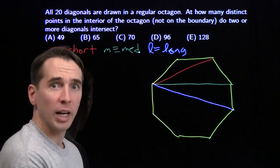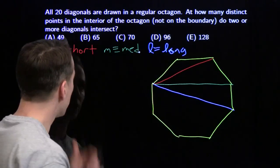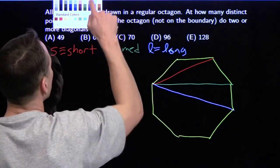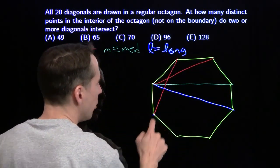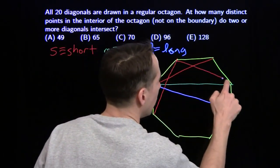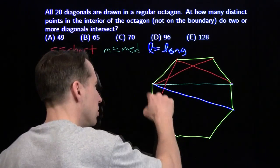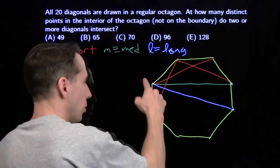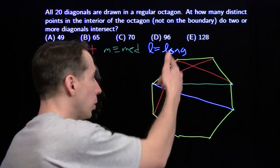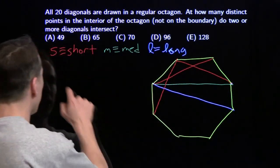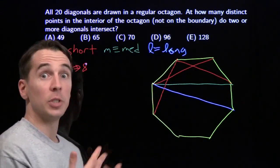We're going to organize our counting by thinking about each type of diagonal and what sort of intersections they generate. Starting with the short ones: for each side of the octagon, there's going to be one point right out in front of it where two short diagonals intersect. So we have eight intersections between two short diagonals.